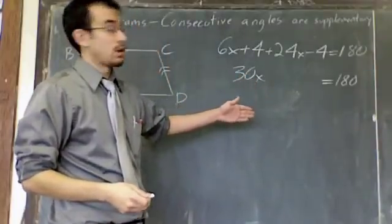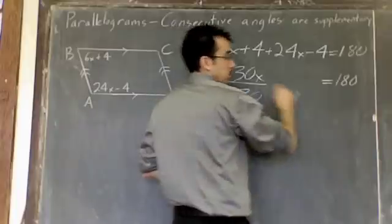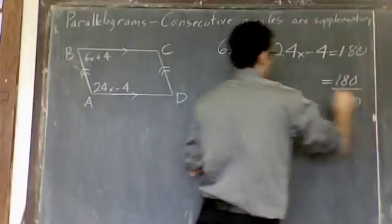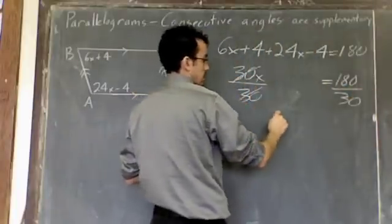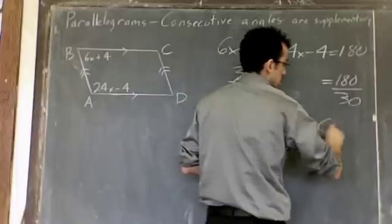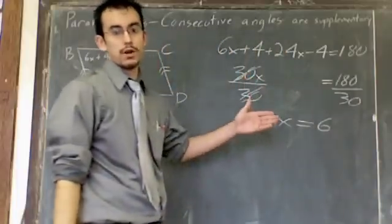Now, I've got 30 times x equals 180. To solve this, all you have to do is divide. Divide by 30 here. Divide by 30 here. So, we're going to get x is 6. 180 divided by 30 is 6.